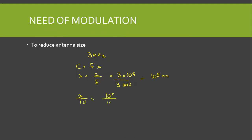For example, if the antenna size is λ/10, we get 10⁴ meters, which is actually 10 kilometers. This length is practically not possible, that's why we need to perform modulation. It is not practically possible to have an antenna of 10 kilometers, so we shift the signal to a higher frequency by performing modulation.